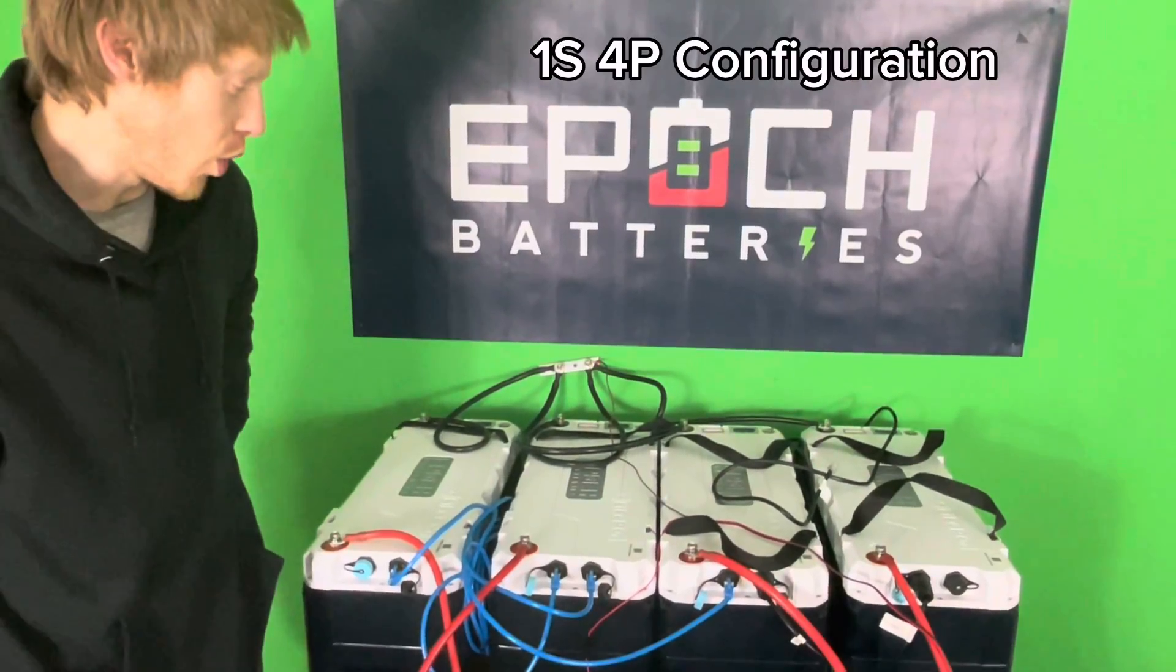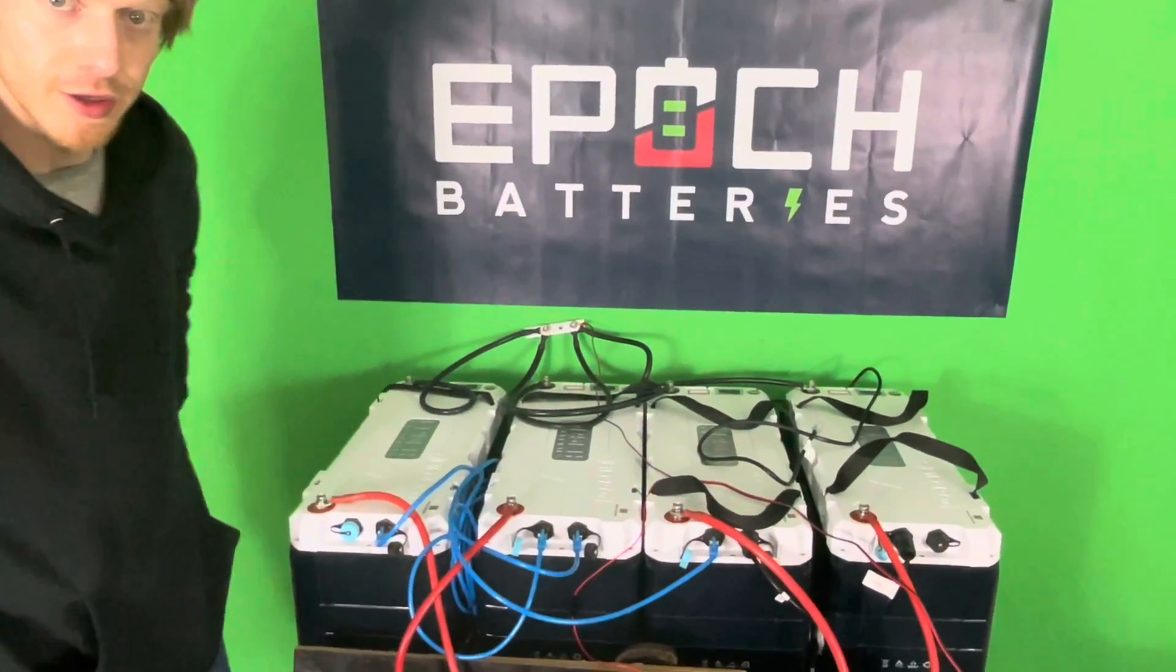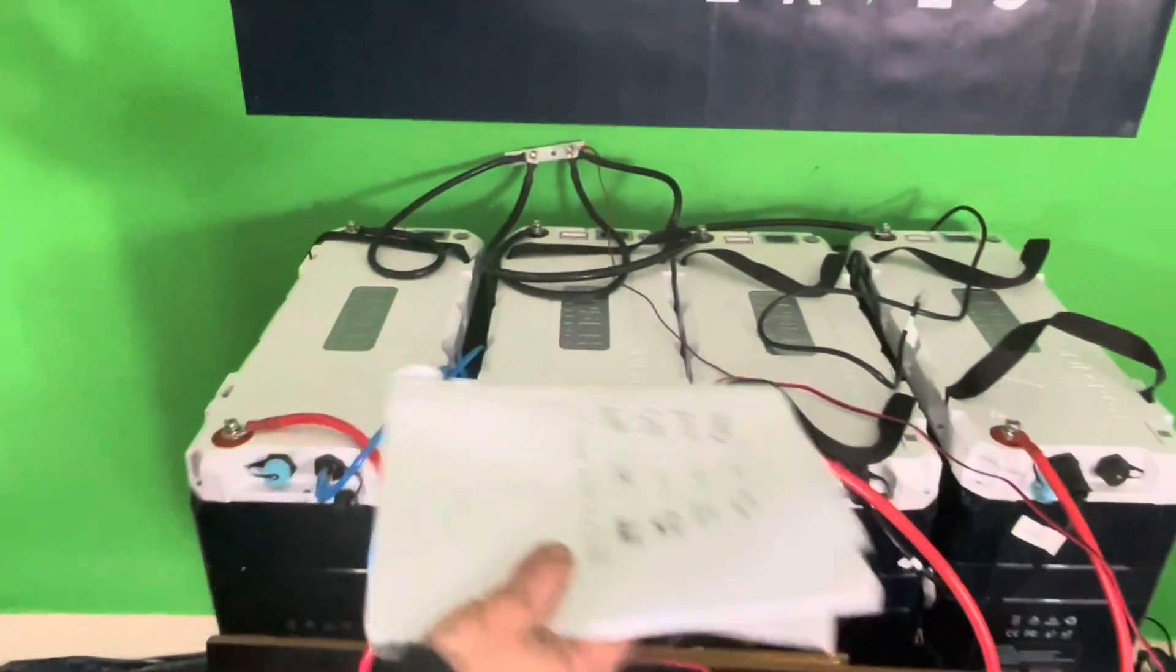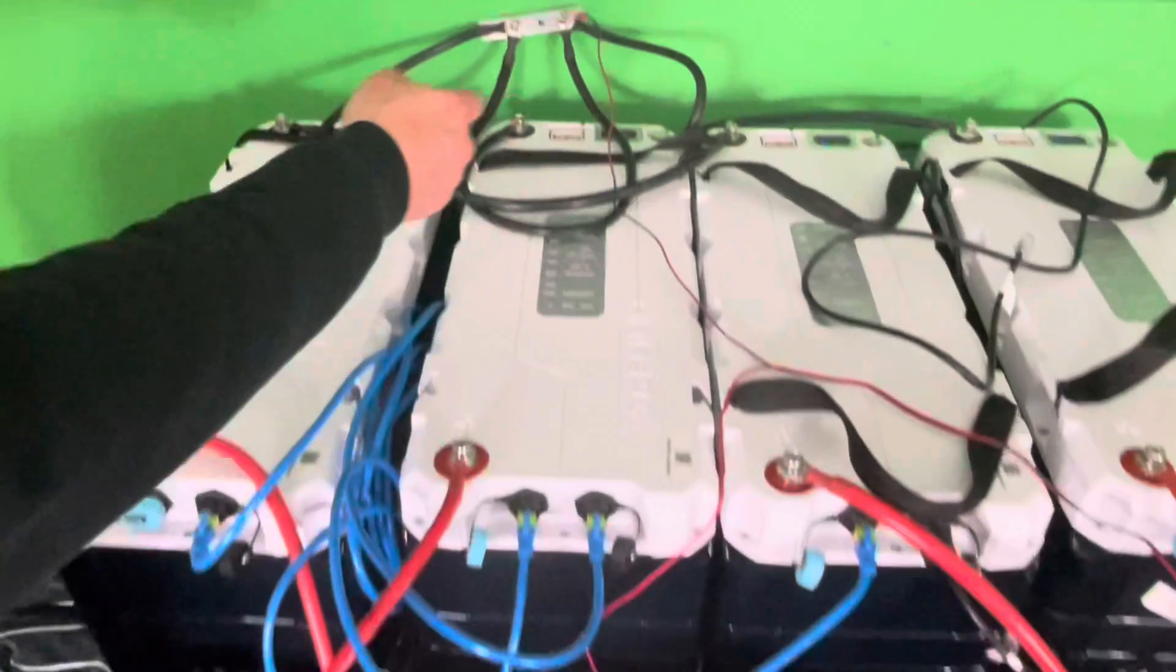Alright, so here we have the 1S4P configuration, probably the easiest of the four. And as you can see, we have all four units wired in parallel and we're doing them through a bus bar. So there's a positive bus bar and there's a negative.